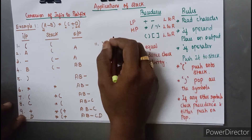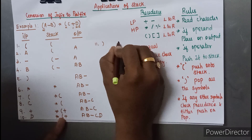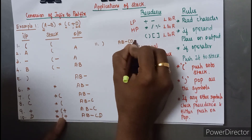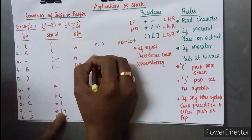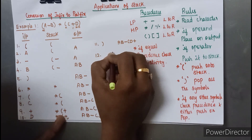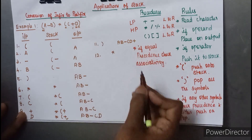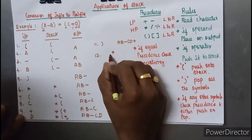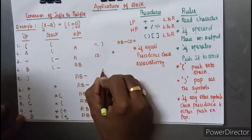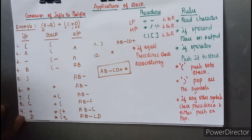The next character is a close parenthesis. As per the rule, all symbols present inside the stack must be popped out until we reach the open parenthesis. We pop the plus symbol first, giving output 'ab-cd+', and we stop at the matching open parenthesis, leaving the star on top of the stack. As we have reached the end of the string, we pop all remaining symbols from the stack. The multiplication symbol is popped out and the final output is 'ab-cd+*', which is the answer for the above infix expression.